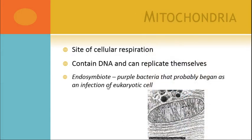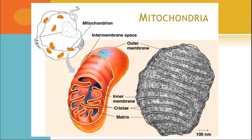Mitochondria are the powerhouse of the cell. This is the site of cellular respiration, which is the energy process — that's what's going to generate ATP. They do contain DNA, and they can replicate themselves. They are endosymbiotes, and we will talk about this in a later lecture. The interesting thing about mitochondria is that, like chloroplasts, they have a double membrane — all of the other organelles in the cell have single membranes, but they actually have an outer and inner membrane, which will be important when we talk about endosymbiosis.